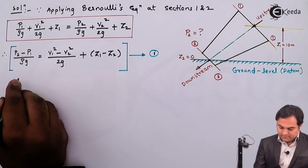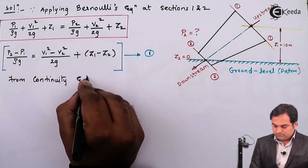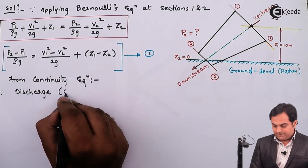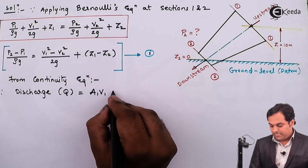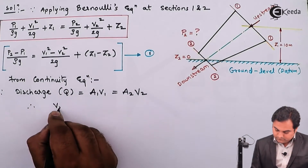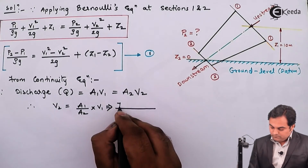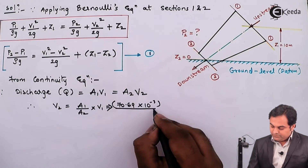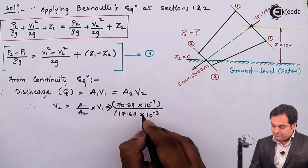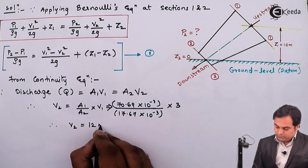From the continuity equation, discharge q = a1·v1 = a2·v2. Area 1 is 70.69 × 10⁻³ m², area 2 is 17.67 × 10⁻³ m², and velocity v1 is 3 m/s. Solving for v2: v2 = (a1·v1)/a2 = (70.69 × 10⁻³ × 3) / (17.67 × 10⁻³), giving v2 = 12 meter per second.